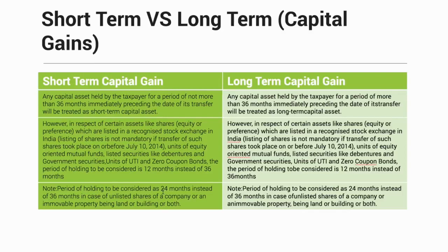The next exception: the period of holding can be considered as 24 months instead of 36 months in the case of unlisted shares of a company — for example, shares of a company that are not listed on a recognized exchange like the National Stock Exchange or Bombay Stock Exchange, but where you directly contact the company to buy or sell shares. The minimum duration here is 24 months.